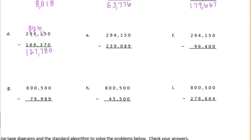E. 0 minus 9 we can't do that, so we're going to borrow. 10 minus 9 is 1. 4 minus 8 we can't do. 14 minus 8 is 6. 0 minus 0 is 0. 4 minus 9 we need to borrow. 14 minus 9 is 5. 8 minus 3 is 5. And 2 minus 2 is 0. We have 55,061.